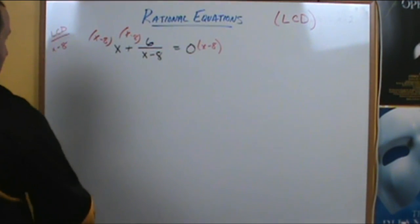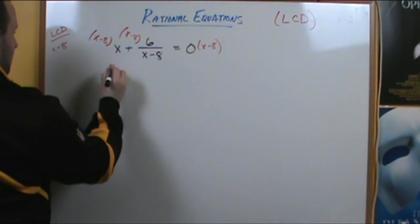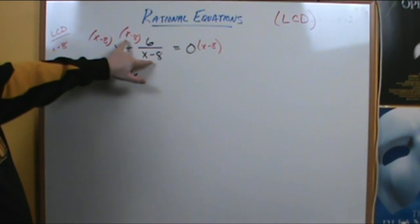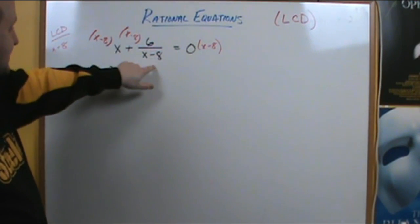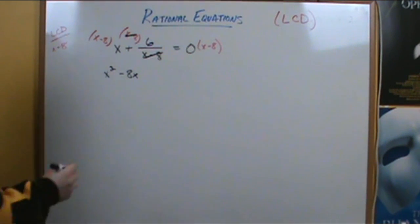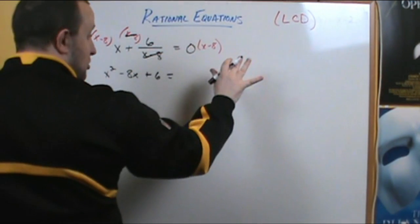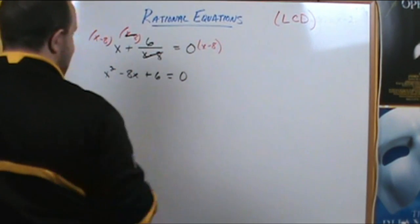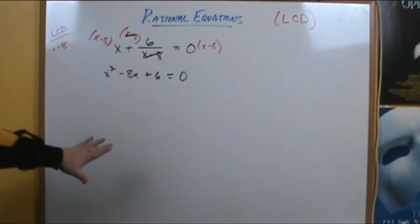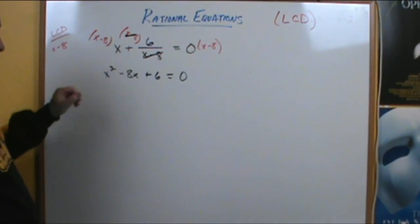When we multiply the first term by x minus 8, we get x squared minus 8x. The interesting thing happens with this term: x minus 8 times 6 divided by x minus 8 — the x minus 8s simplify out. We're left with x squared minus 8x plus 6 equals 0 times x minus 8, which is 0. Now we have a quadratic equation without a denominator — we just got rid of the denominator. We have many methods to solve this equation.